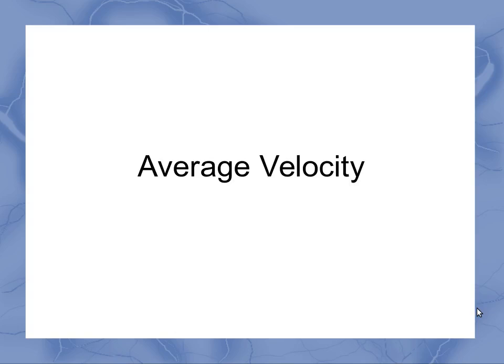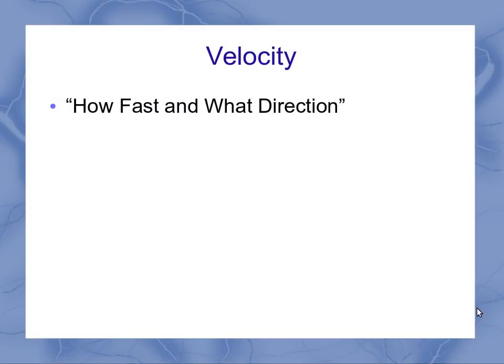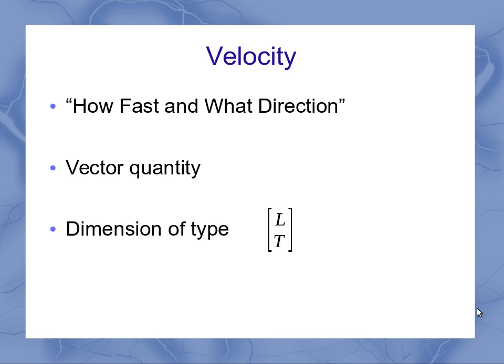Now we have the concept of average velocity. Velocity in general means how fast and what direction is an object moving. That means it's a vector quantity because it has magnitude and direction. It has dimensions of length per time, and specifically, our standard metric unit is going to be meters per second.